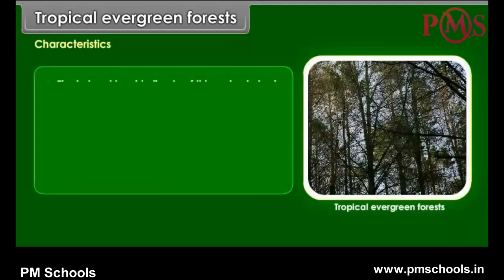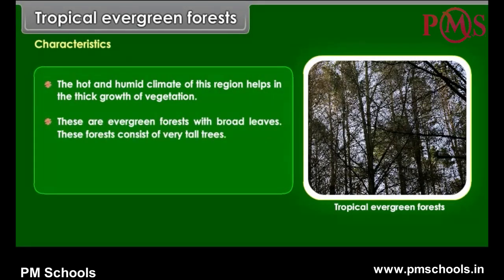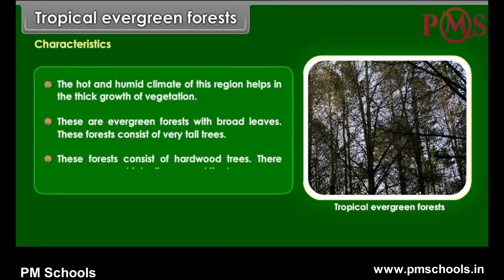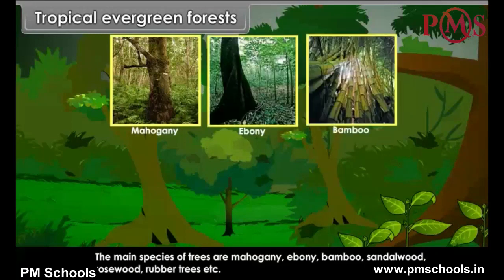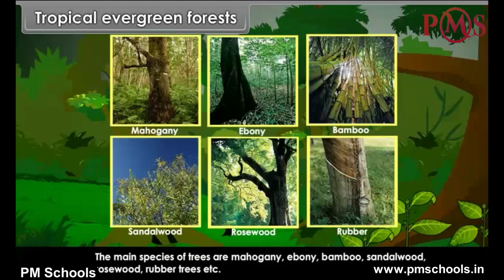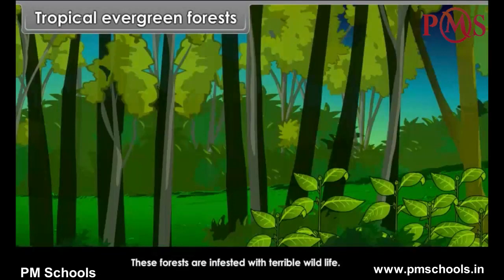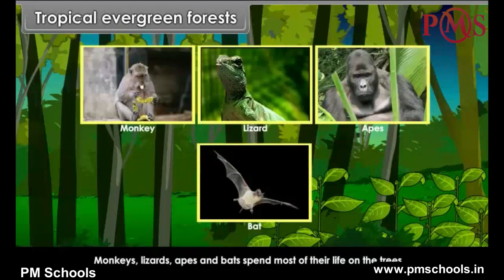Characteristics: The hot and humid climate of this region helps in the thick growth of vegetation. These are evergreen forests with broad leaves consisting of very tall, hardwood trees. There are creepers which cling around the trees. The main species of trees are Mahogany, Ebony, Bamboo, Sandalwood, Rosewood, Rubber trees etc. These forests are infested with terrible wildlife. Monkeys, lizards, apes and bats spend most of their life on the trees.